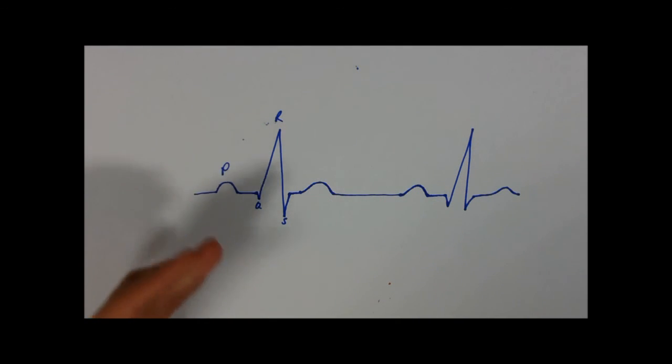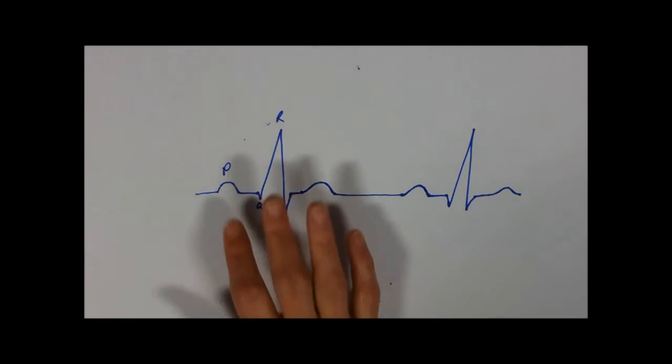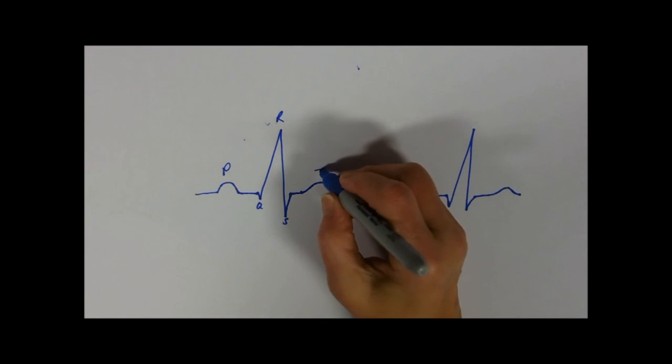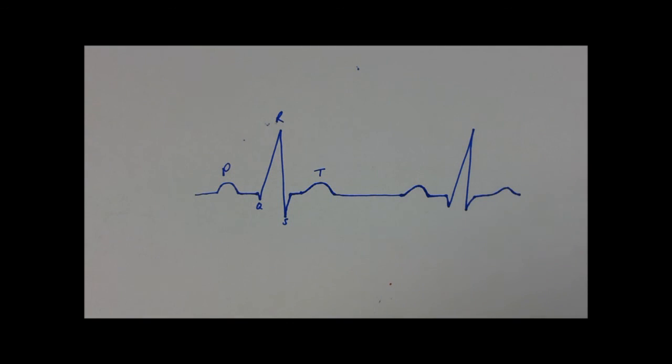So you've got a P wave, QRS, T wave, gap, P wave, QRS. And you need to be able to interpret that. So you need to know what each of these waves is representing. And you need to be able to spot the difference between a normal ECG and an abnormal ECG trace.